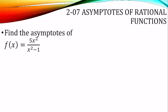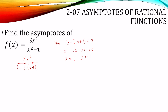Let's find the asymptotes of this function. First, factor. The bottom is a difference of squares, but nothing reduces. For the vertical asymptotes, take that denominator in factored form and set it equal to 0. Since it's factored, take each factor equal to 0, and we get x equals 1 and x equals negative 1. The asymptotes are equations of lines, so they are x equals 1 and x equals negative 1 — not just 1 and negative 1.